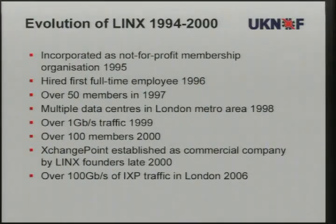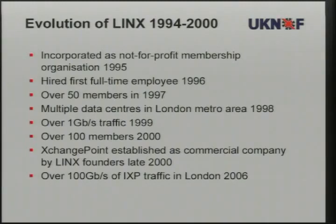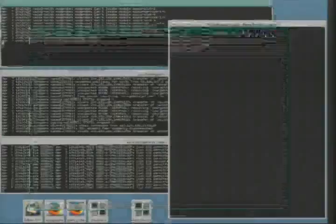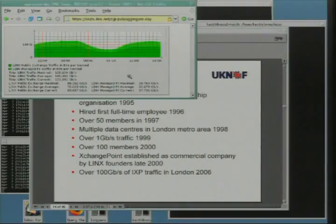The history of LINX is not so different from a lot of other internet exchanges all over the world. After a year we incorporated as a non-profit membership organization. We hired our first full-time employee a year later. By '97 we had 50 members. By '98 we were the first exchange to start going into multiple data centers and connecting them together. First exchange to deploy one gig traffic in '99. It went up to 100 members in 2000, which was the dot-com silly year. We established Exchange Point as a similar company but on commercial principles in late 2000. Around now these guys are pushing 105 gig of traffic through the switch fabric, more than that counting private interconnect.